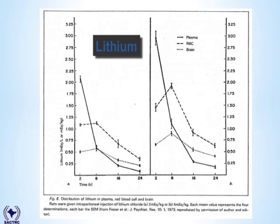This graph gives you an idea of the relative concentrations in different body compartments. Following a therapeutic dose, you get fairly rapid and complete absorption into the plasma, with slower equilibration into the red blood cells and even slower into the brain. This relatively slow equilibration between plasma and brain is important when working out the risk from acute toxicity and also the treatment of chronic toxicity.